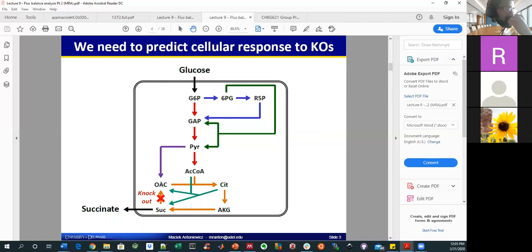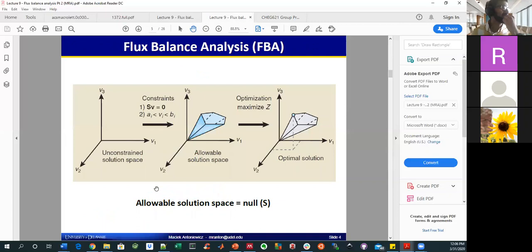But this might not be a knockout that you can do. This might be a step that is essential in one way or another. It seems unlikely here because essentiality usually has to do with not the enzyme itself but the product of the reaction. And what you can see here is that there are still other arrows that get you to OAC. And so in that case, it does seem like you could probably get away with knocking this out.